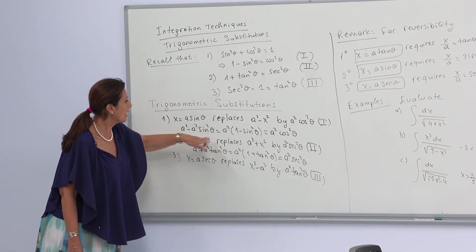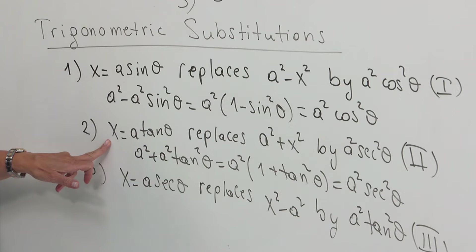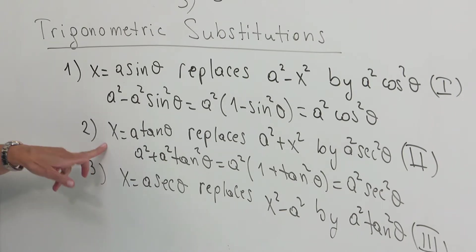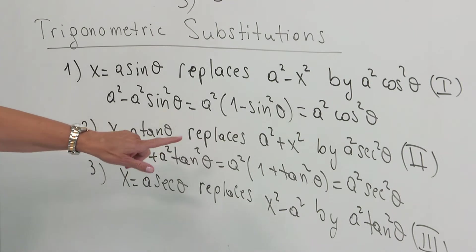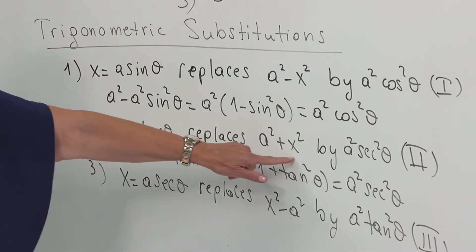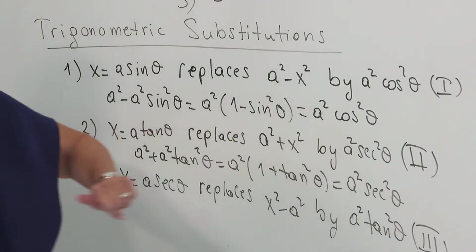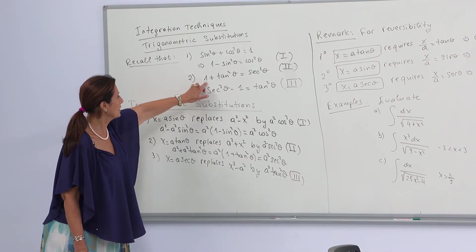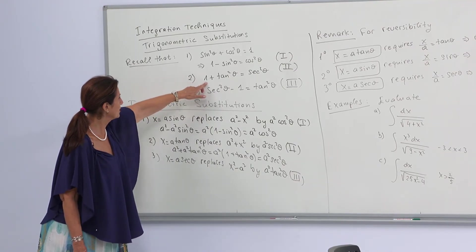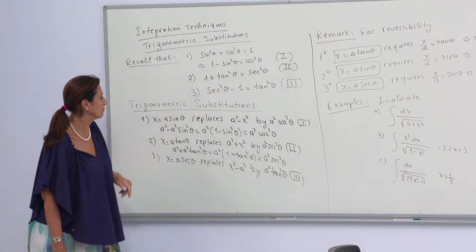Another substitution is x = a tanθ. This replaces a² + x² by a² sec²θ. Instead of 1, if you have a, it is the second form.